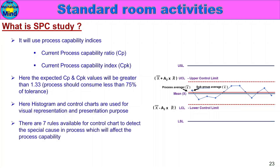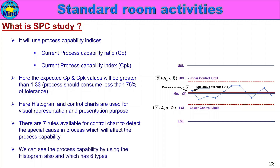Causes in a process affect the process capability. There are 7 rules in the control chart. We can also see process capability by using a histogram, which has 6 types.